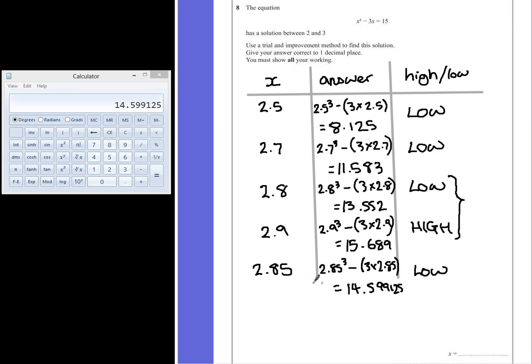So it shows that the answer has got to be bigger than 2.85. Therefore 2.9 is the closest value to one decimal place. We can see that with the fact that this is only 0.689 away from 15, whereas 2.8 was nearly one and a half away. So 2.9 is your final answer.